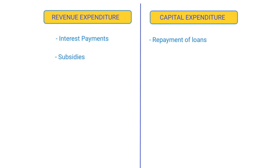The next item under revenue expenditure is subsidies. The major subsidies include food subsidy, subsidy on fertilizers, and petroleum. Although subsidies on fertilizers and petroleum have been reduced in recent times, the overall subsidy has seen an increase due to food subsidy. Subsidies are current expenditures and do not result in the creation of any assets, which is why they come under revenue expenditure. Next are the salaries of government employees and constitutional functionaries — these are day-to-day expenses to keep the government machinery running, and hence come under revenue expenditure.